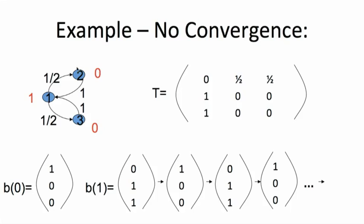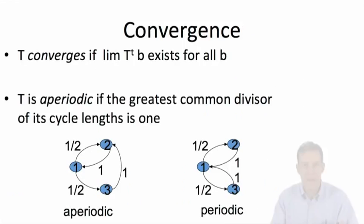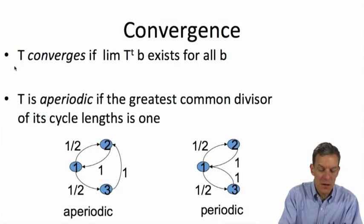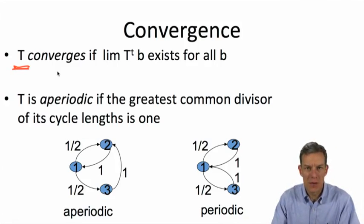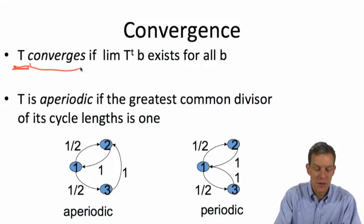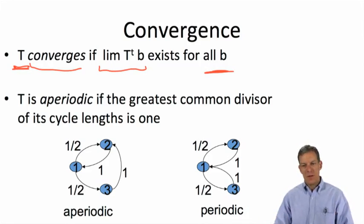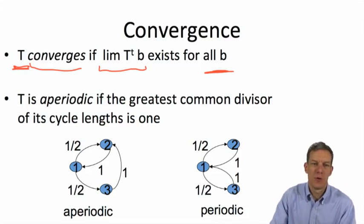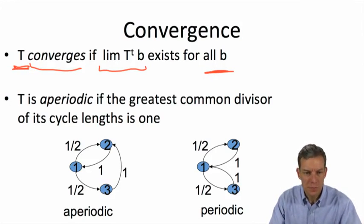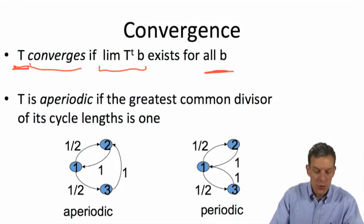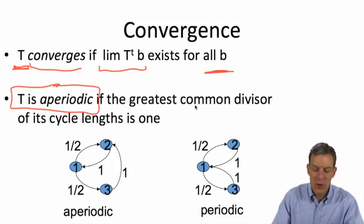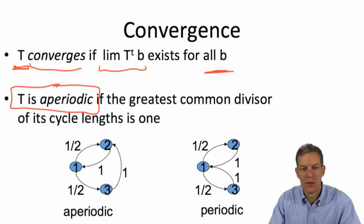Whenever all cycles in the graph are even, we can find situations where we get non-convergence. So let's look at the formal conditions that define convergence. We say that society T converges if the limit of T raised to the t-th power exists for all initial beliefs — no matter what initial beliefs we start with, the overall belief process converges.